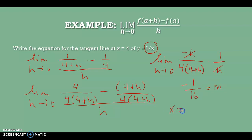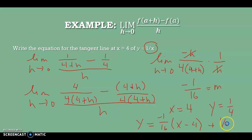The x-coordinate is x equals 4. To write the tangent line equation I need three things: x-coordinate 4, slope negative 1/16, and y-coordinate 1/4 — found by plugging 4 into the function. So the equation is y equals negative 1/16 times x minus 4, plus 1/4. You can distribute and simplify if you want, but you don't have to — you're done at this point. You have an equation for the tangent line.